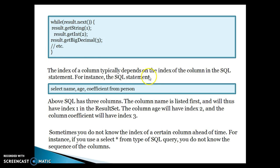For instance, for the SQL statement select name, age, coefficient — for name the index is 1, for age it is 2, and for coefficient it is 3. Our SQL query has three columns. The column listed first will have index 1 in the ResultSet, age will have index 2, and coefficient will have index 3.